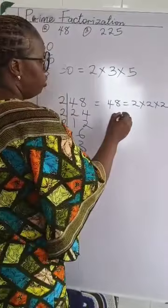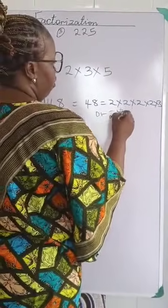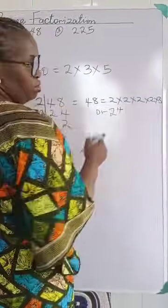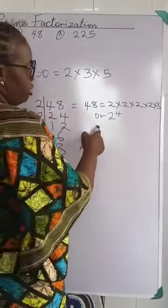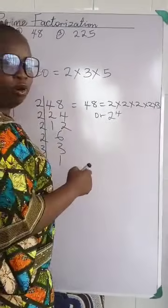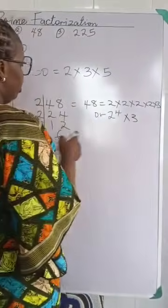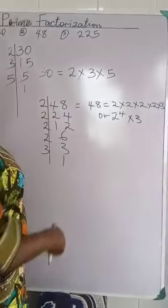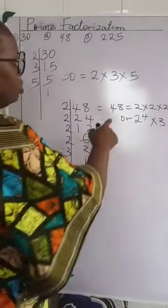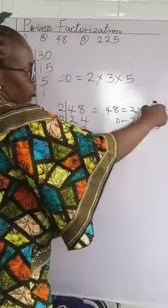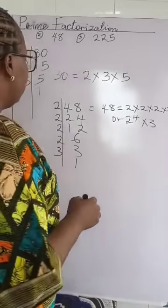Or you can write it this way: 2 raised to the power of 4. How many times did the 2 appear? 4 times. So we have 2 raised to the power of 4 multiplied by 3, which is the answer. Do you understand? 2 times 2 times 2 times 2 times 3 will give us 48.